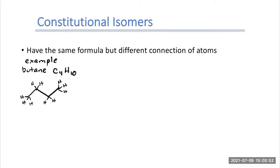Some of you might have drawn a branched structure instead. Each carbon on the end has three hydrogens — three, six, nine — and the middle one has our tenth hydrogen, giving us four carbons total. These are our two possible constitutional isomers for butane. Not too bad — we can do this.